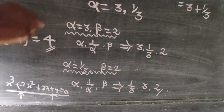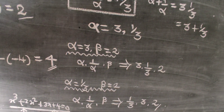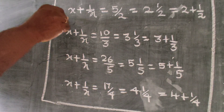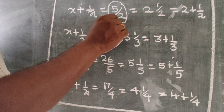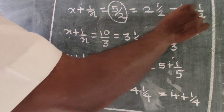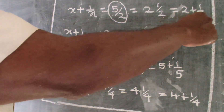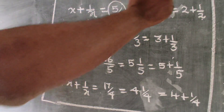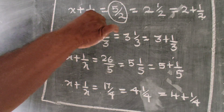Let's look at this directly using a standard result. If x + 1/x = 5/2, which is 2 and a half, that means x = 2 or 1/2. Similarly, if x + 1/x = 10/3, then x = 3 or 1/3.